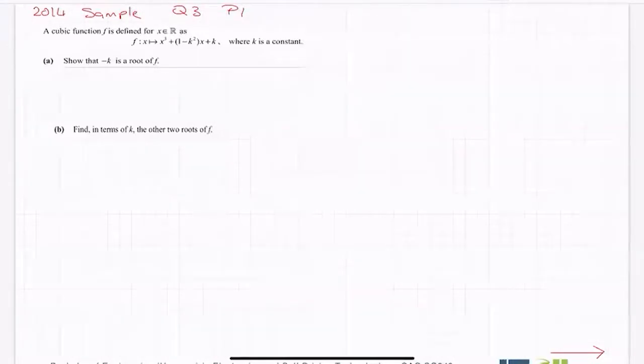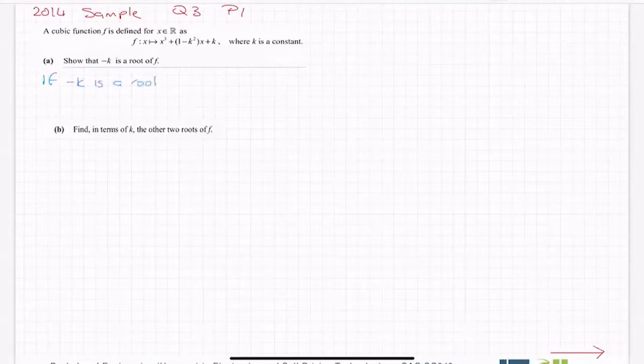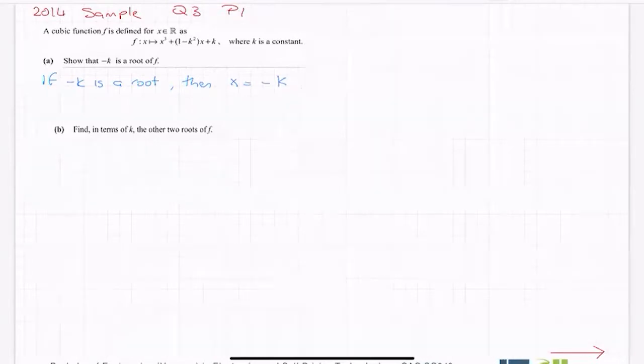Show that minus k is a root of f. Well, the first thing I would write down is if minus k is a root, then x is equal to minus k. And the reason I write that down is so that I sub in the minus k for x and not for k the letter, you don't get confused between your letters.